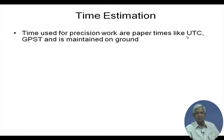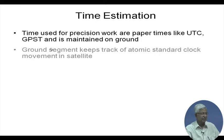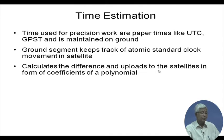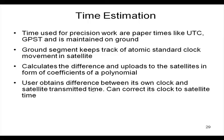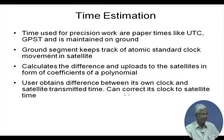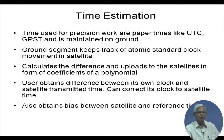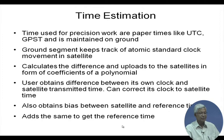The reference time is a coordinated time — UTC or GPS time — maintained on the ground. The ground segment keeps track of the atomic clock standard, calculates the difference, and uploads it to the satellite in the form of coefficients of a polynomial. Instead of correcting the clock on the satellite using additional circuitry, it simply sends a polynomial correction parameter, which is broadcasted to the user. The user obtains the difference between its own clock and the satellite-transmitted time, corrects to satellite time, and then adds the bias between satellite and reference time to get the reference time.